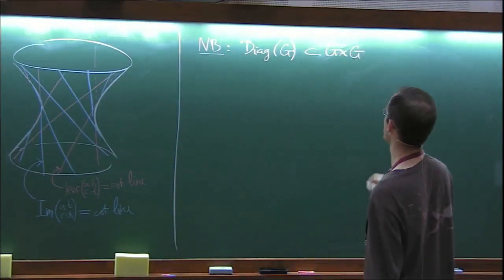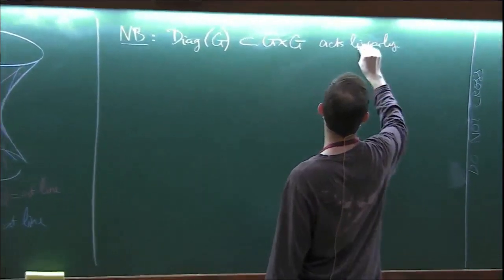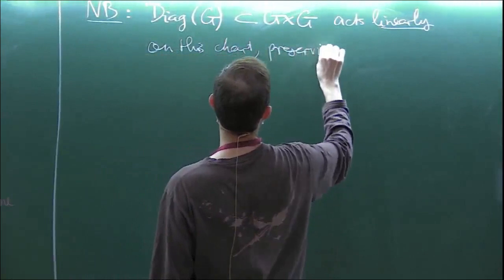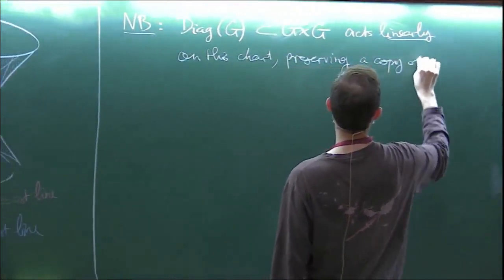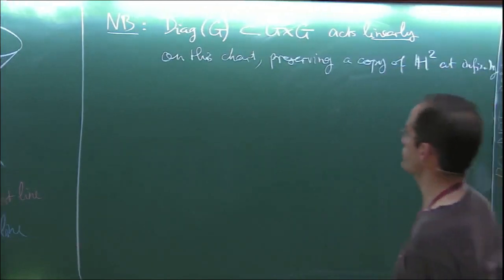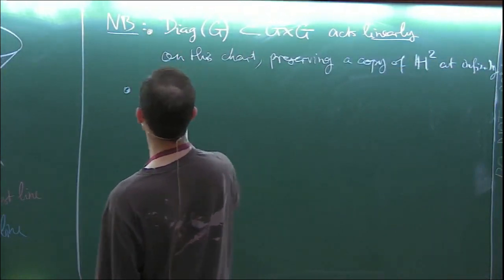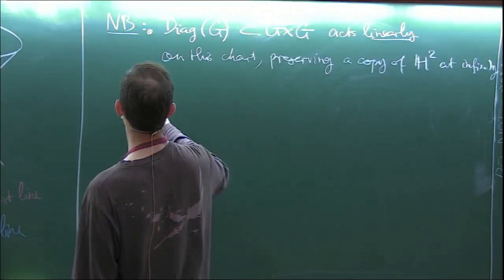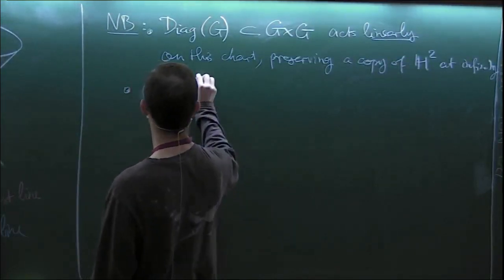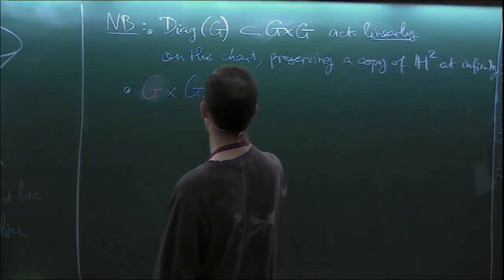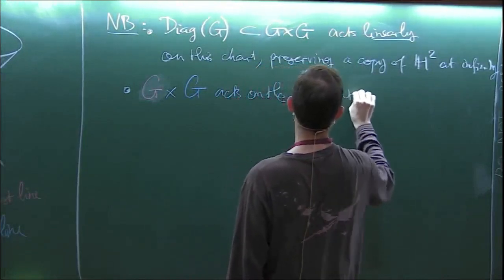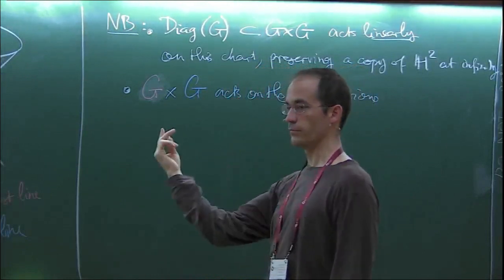The diagonal embedding of G acts linearly on this chart, preserving a copy of H^2 at infinity. Another thing we could mention is that G cross G acts on the two foliations, on the circle of blue lines and the circle of red lines.